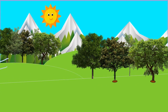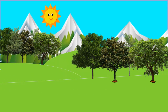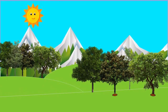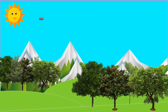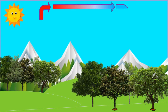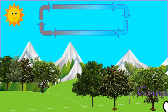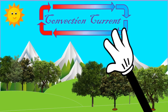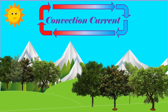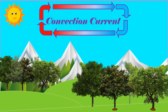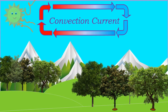The wind is caused when air is heated by the sun. The sun heats up some parts of the atmosphere more than others, and the heated air expands and starts to move around. So wind wouldn't be formed without the sun.